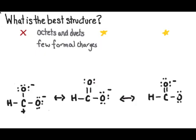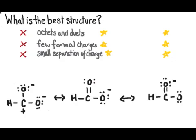I'm also going to look for a few formal charges. The structure on the left has three formal charges. The structures on the right have only one, so we have a pass on the right and a fail on the left. We're also looking at the small separation of charge, meaning we're going to try to minimize the formation of positive and negative charges in the same molecule. We pass on the right, but we fail on the left.